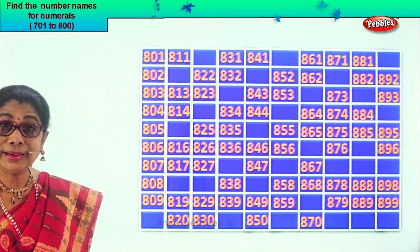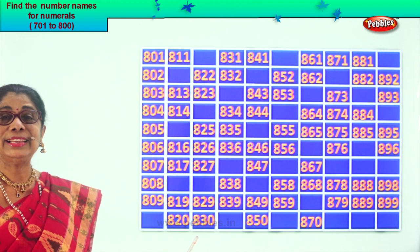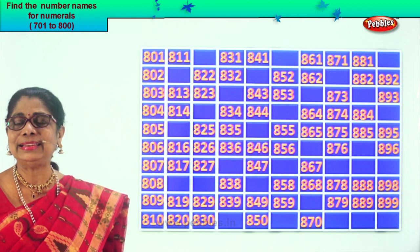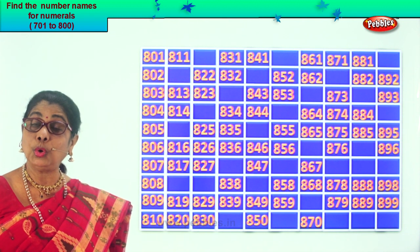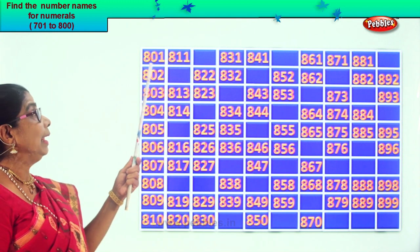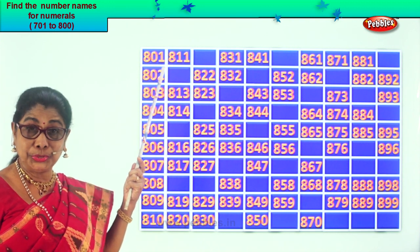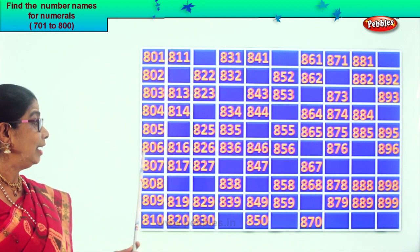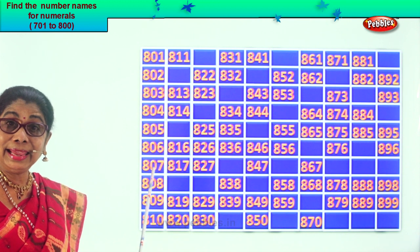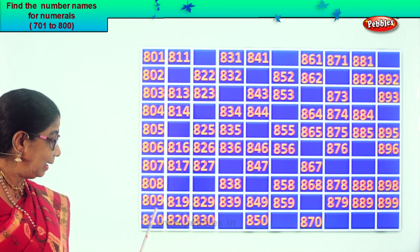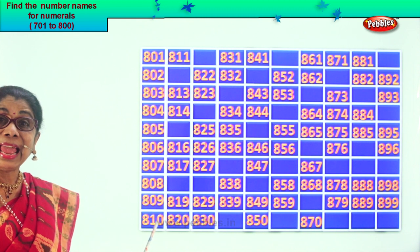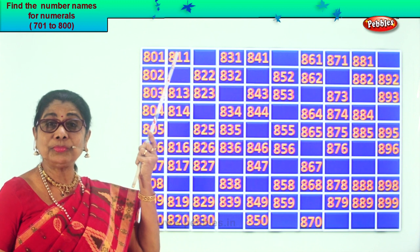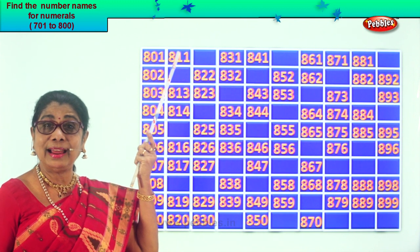After nine comes ten, so we get the missing number here: eight hundred ten. Now say aloud with me — eight hundred one, eight hundred two, eight hundred three, eight hundred four, eight hundred five, eight hundred six, eight hundred seven, eight hundred eight, eight hundred nine, eight hundred ten.